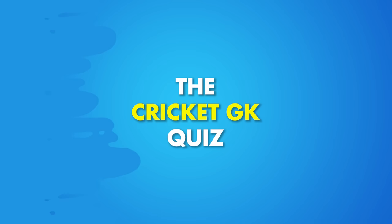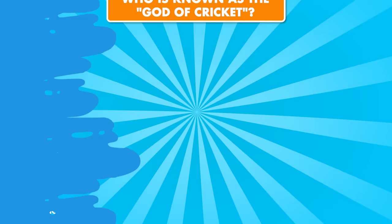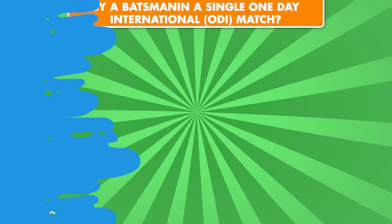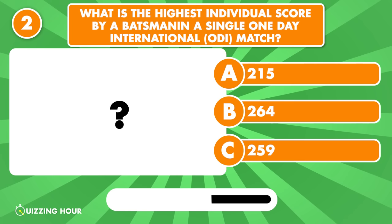Welcome to Quizzing Hour. Get ready for the cricket general knowledge quiz. Let's go! Who is known as the god of cricket? What is the highest individual score by a batsman in a single One-Day International match? 264 by Rohit Sharma.